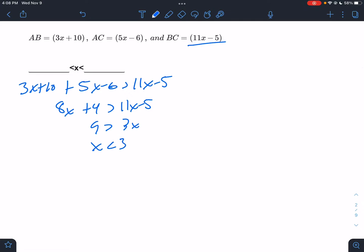So 3x must be less than 9. X must be less than 3. What's the next situation that must be true? Let's pretend this one's the biggest one.